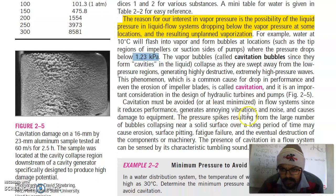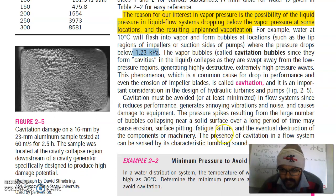Cavitation must be avoided in flow systems since it reduces performance, generates annoying vibrations and noise, and causes damage to equipment. The pressure spikes resulting from the large number of bubbles collapsing near a solid surface over a long period of time may cause erosion, surface pitting, fatigue failure and the eventual destruction of components or machinery. The presence of cavitation in a flow system can be sensed by its characteristic tumbling sound.